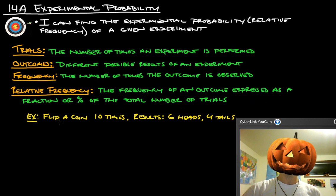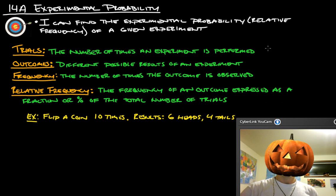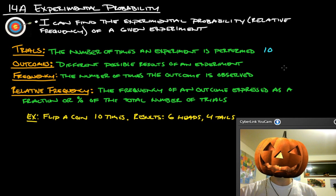So a really simple version of that would be flip a coin ten times, the results, you get six heads and four tails. So the trials on that would be, let's put that in blue, that would be ten.